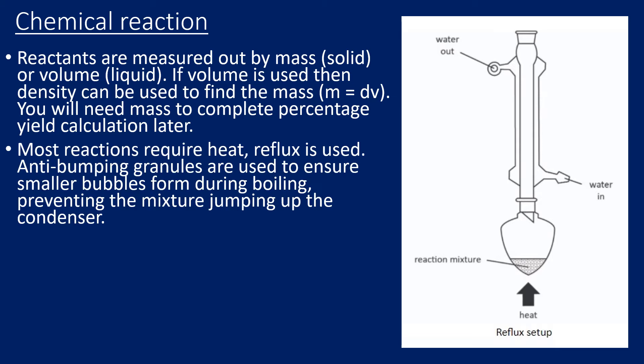Most reactions would require heat, so usually we'd use a reflux and set up the apparatus shown in the diagram. Anti-bumping granules are often used because they cause smaller vapor bubbles to form within the mixture, preventing violent bubbling and larger bubbles that could cause the reactive mixture to jump up into the condenser.